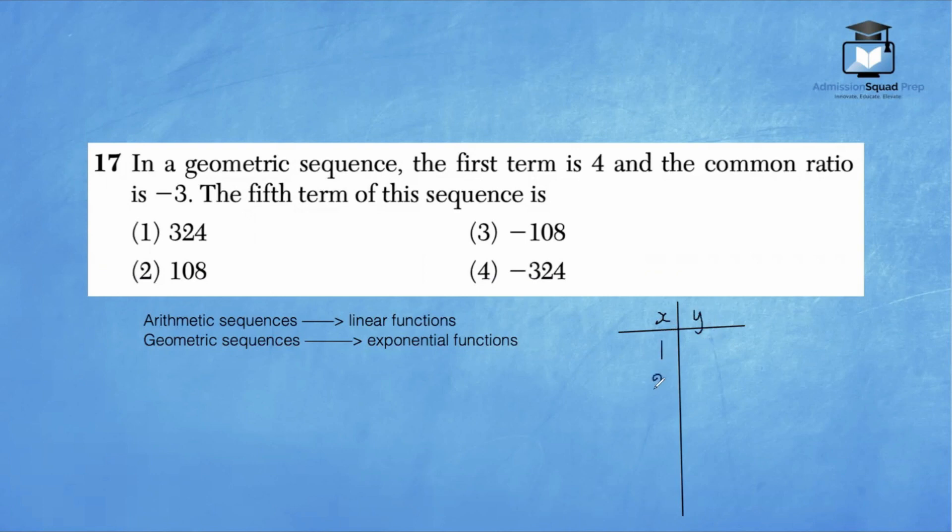So we have 1, 2, 3, 4, and 5. It says the first term is 4. Anytime we have a geometric sequence, because it's similar to the exponential function, we are multiplying or dividing by the same exact number.